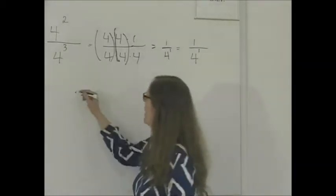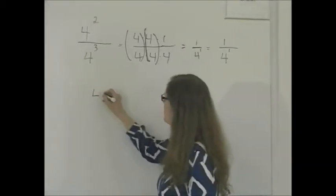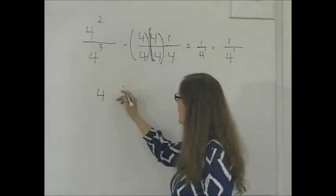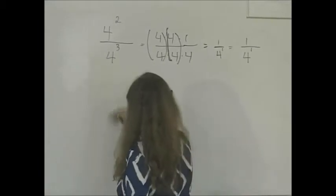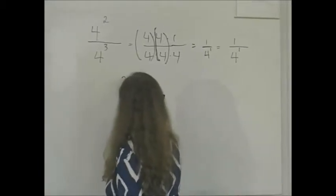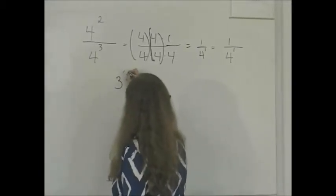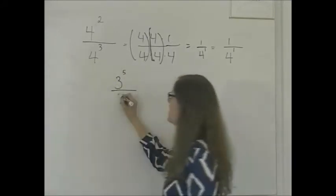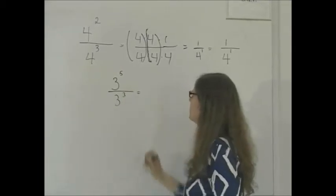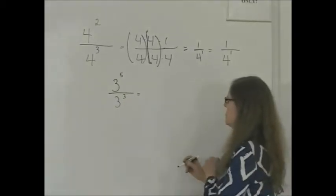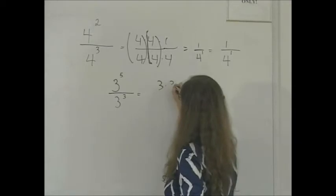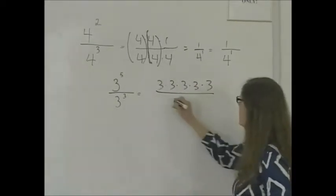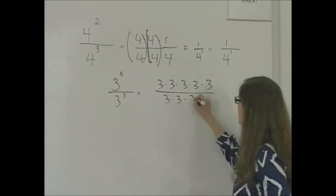What if it was the other way around? What if it was the larger number on top? Let's use a different number — let's use 3. 3 to the fifth power divided by 3 to the third power. This is going to be 3 times 3 times 3 times 3 times 3, all over 3 times 3 times 3.